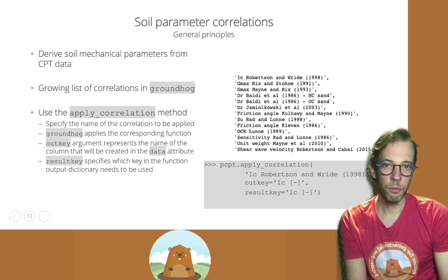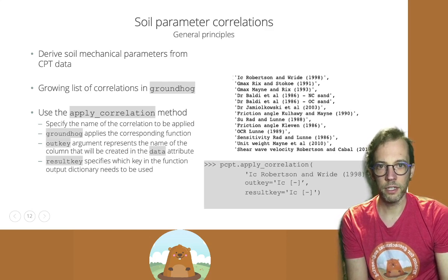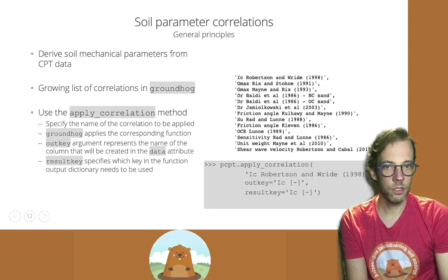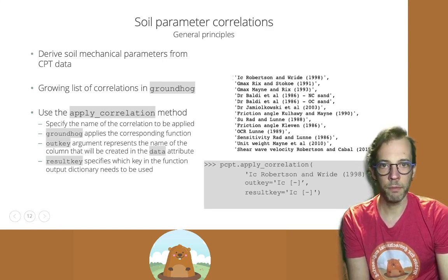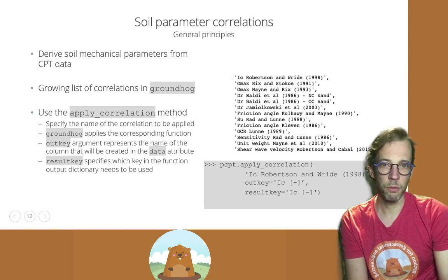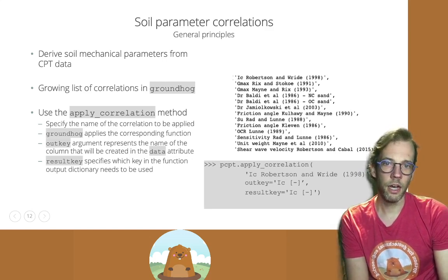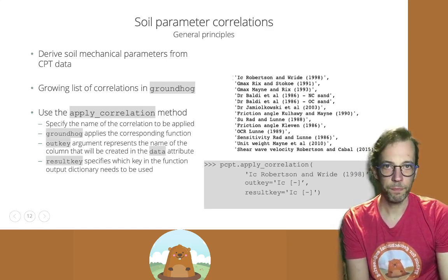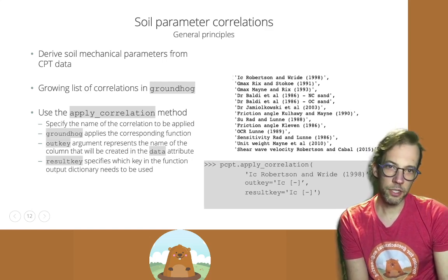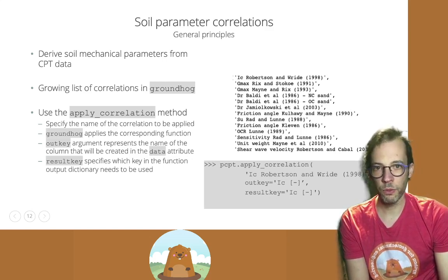But here, if you want to apply them on an entire PCPT trace, you can simply call the apply correlation method and specify which correlation you want to apply by name. So you can see the list of available correlations on the right hand side as well.